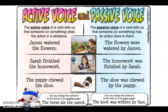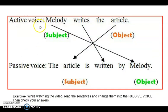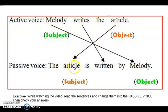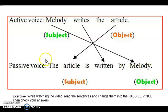Let's check this example. Active voice: 'Melody writes the article.' Melody es el sujeto, writes es propio de un presente simple, y the article es el objeto. Para convertirlo en passive voice, the article pasaría a ser el sujeto. Es presente simple, entonces utilizaré 'is', la forma del verbo to be, más la forma de past participle del verbo escribir, que en este caso es 'written', y por último el sujeto: 'by Melody.' La oración queda: 'The article is written by Melody.'